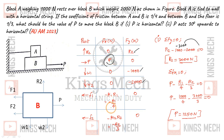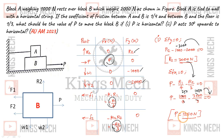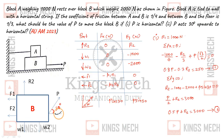Applying summation Fx = 0: positive P minus R1/4 minus R2/3 = 0. Substituting: P minus 1000/4 minus 3000/3 = 0, so P minus 250 minus 1000 = 0, giving P = 1250 Newton. This is the answer for Case 1 where P is horizontal.